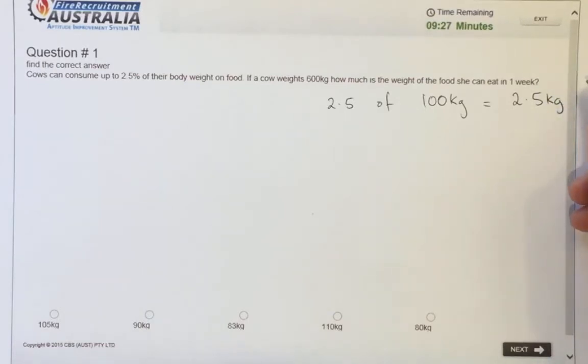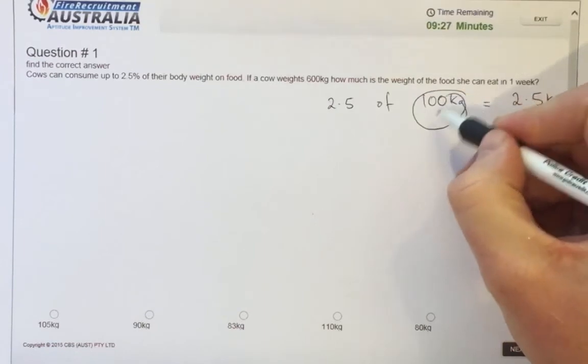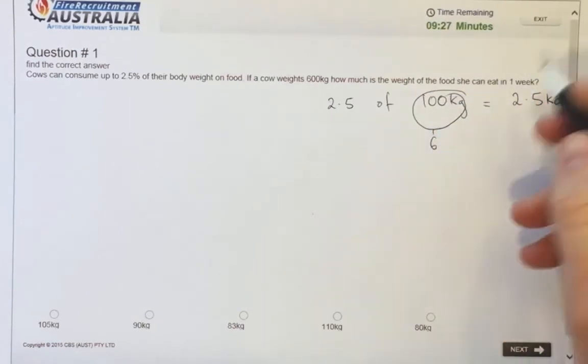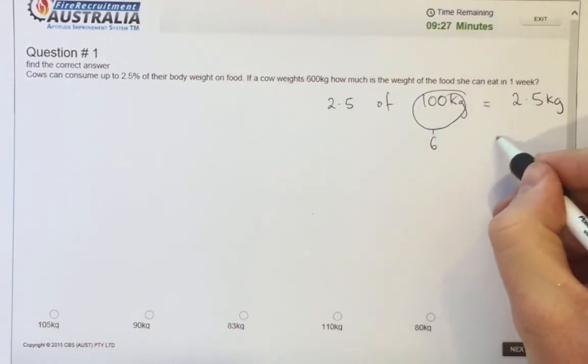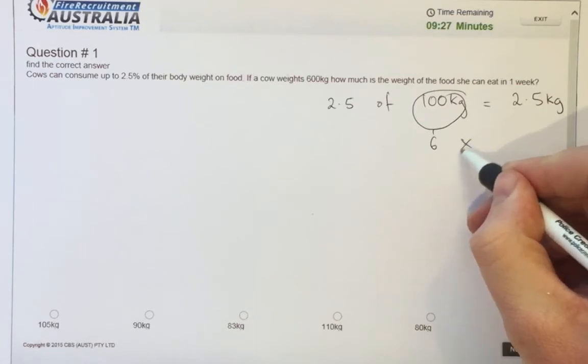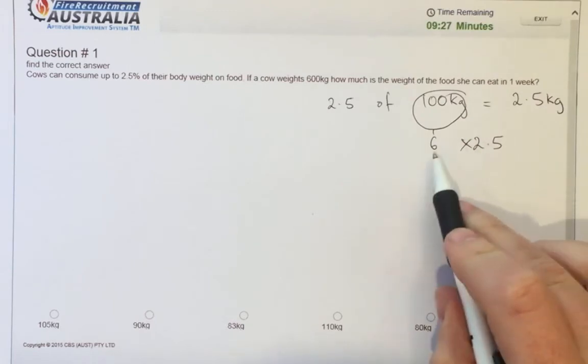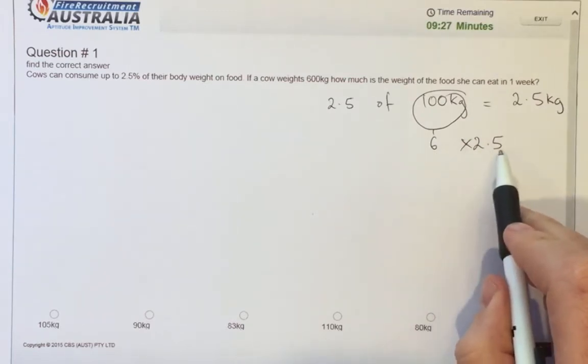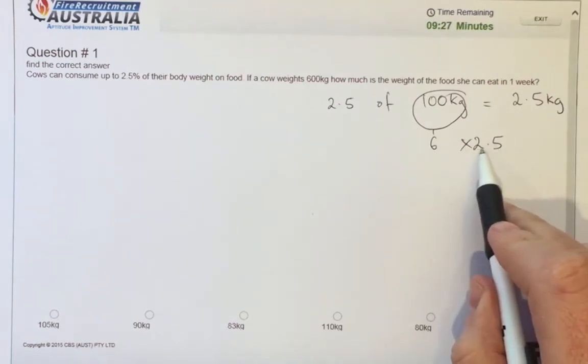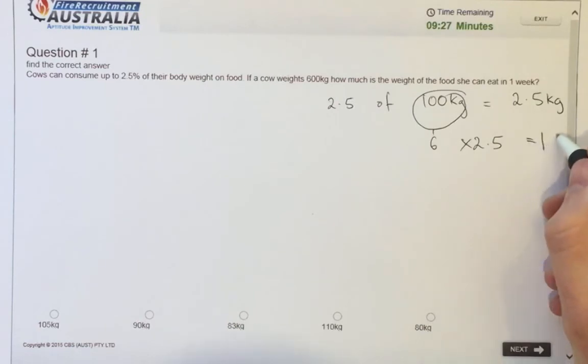So we're talking about 600 kilograms. So we need to times the two and a half by six. So six by two and a half. Two sixes is 12. Half times six is three. That's 15 kilograms a day.